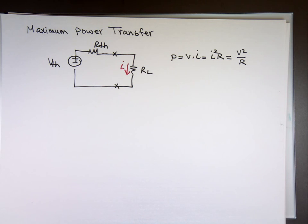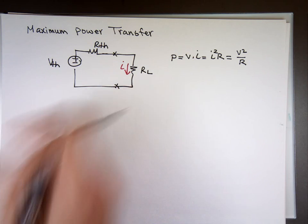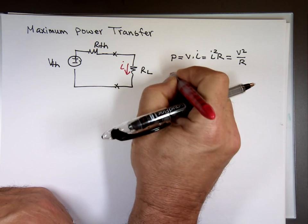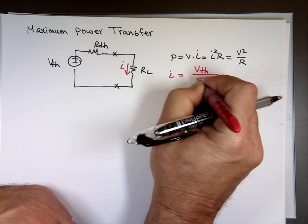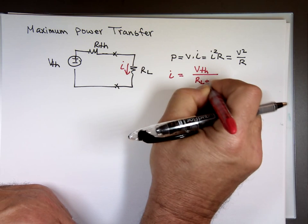If I want to find the current through the circuit, where is the current through that? Ohm's law is the current is the voltage, which is V thevenin, over the sum of these, which is R load plus R thevenin.